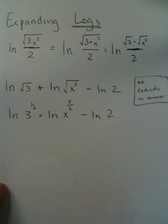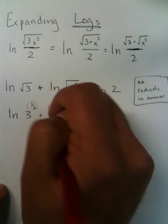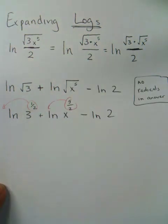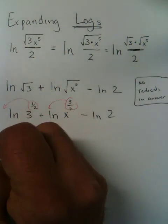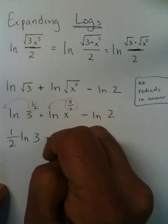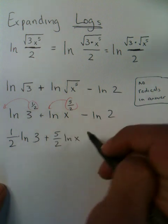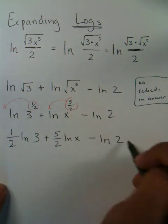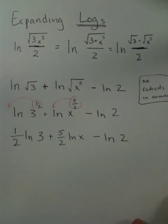Just like all other videos that I've made on expanding logs, you have to take this exponent and put it in the very front of log. You're not allowed to have exponents in your answer. So you have one half the natural log of three, and these are multiplied, plus five halves the natural log of x minus the natural log of two.